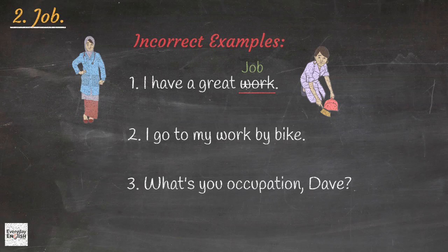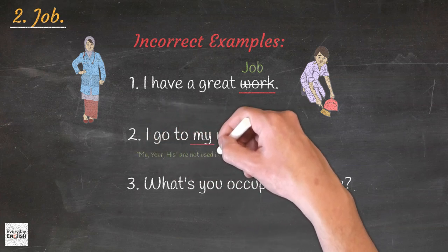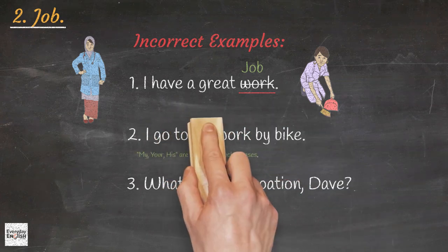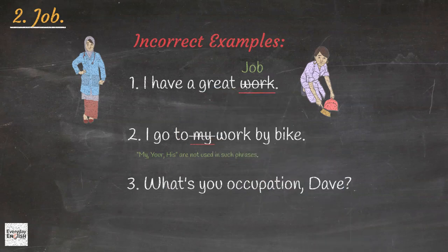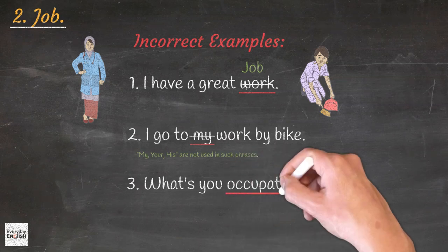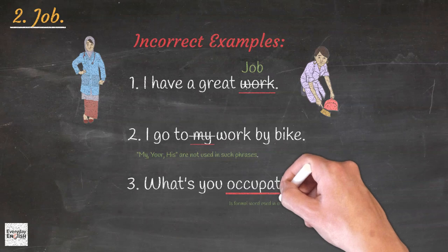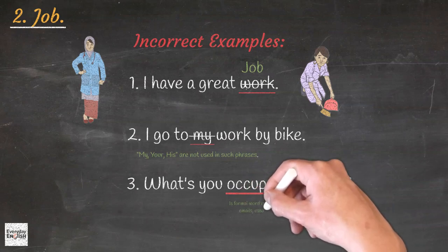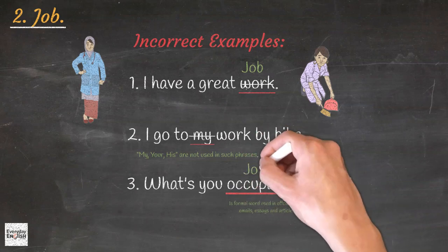My, your, his are not used in such phrases. Using a pronoun involves making a choice, such as using 'you' or 'his,' to indicate that you also go to someone else's job. Hence, we should say: I go to work by bike. Occupation is a formal word used in official writing, such as emails, essays, and articles. The correct term should be 'a job.' What is your job?